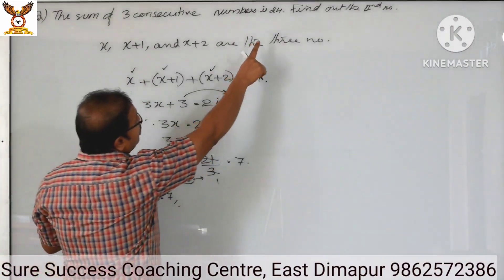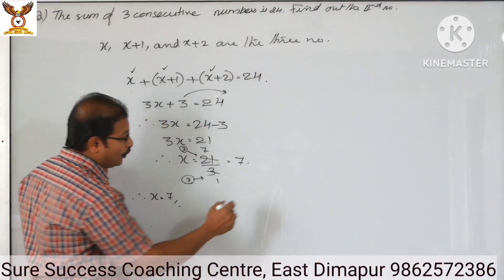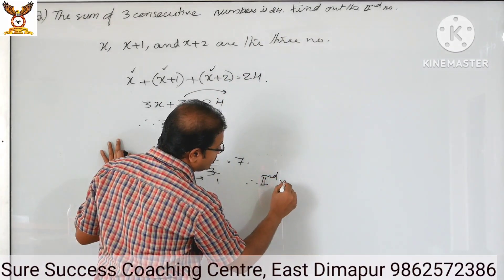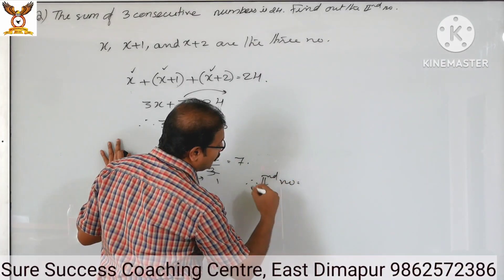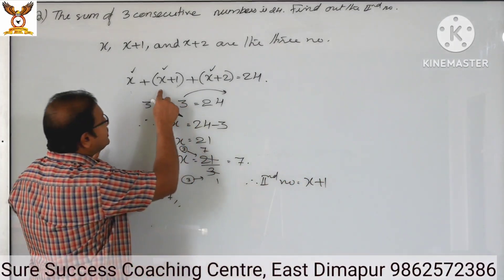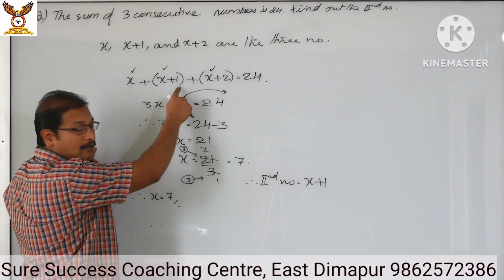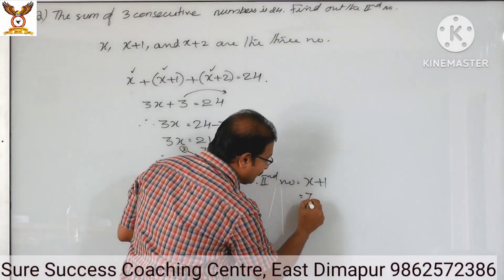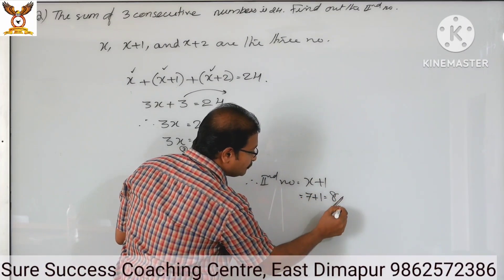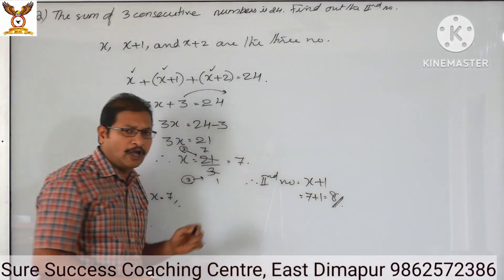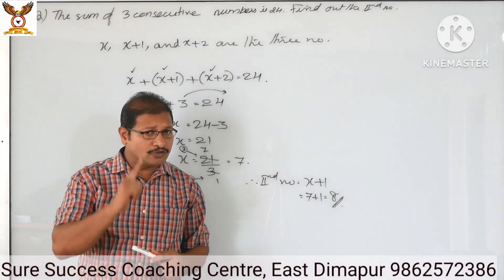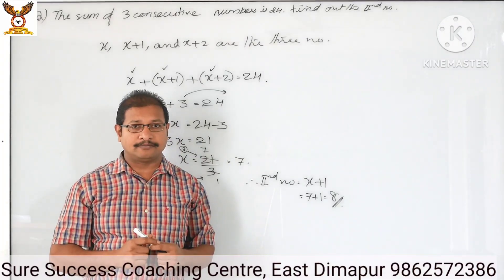So what do you want? Find the second number. Therefore the second number equals x plus 1. The second number is x plus 1, that is 7 plus 1 equals 8. I hope these questions are not tough. You can understand. Stay tuned and wait for the next question.